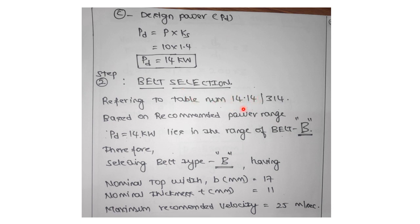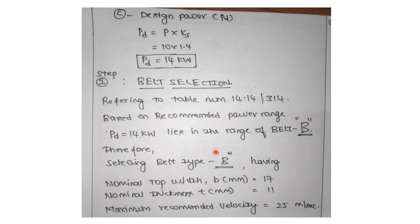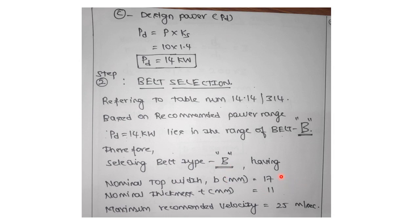Refer to table number 14.14 to select the belt type. The design power is 14 kilowatt, which falls under category B (range 1.5 to 15 kW). Although 14 kW also falls in the 10–70 range, initially select the lower category. If it doesn't work out in pitch diameter selection, you can change it. Select belt type B, and note down the nominal top width, nominal top thickness, and maximum recommended velocity.